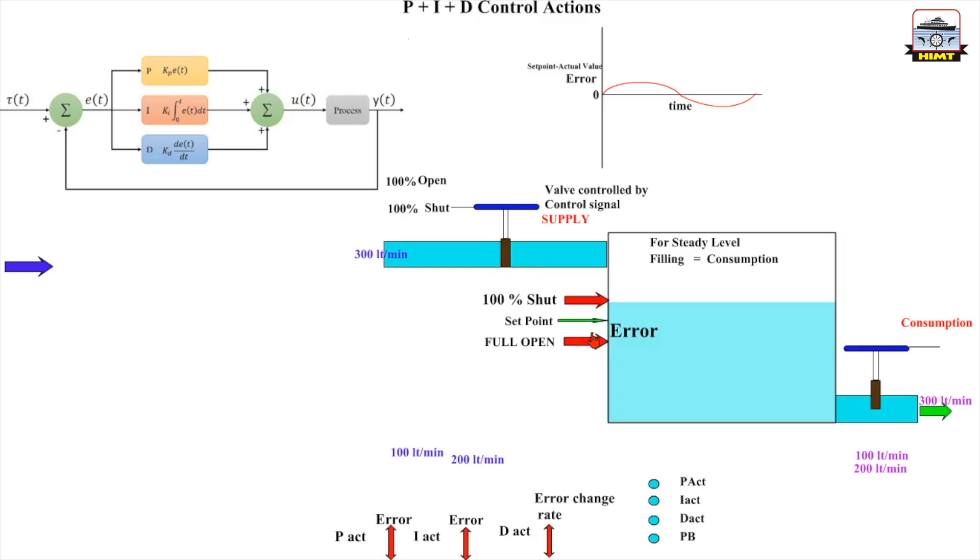So this adjustment is in simple terms called the proportional band. The narrower the proportional band, I can reduce the maximum deviation.